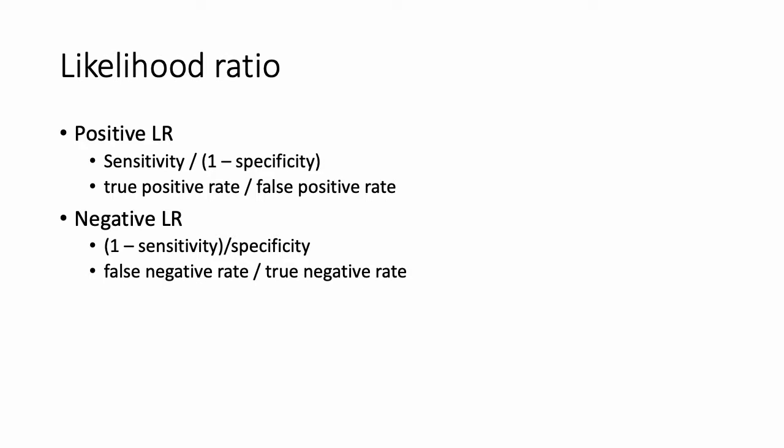A higher likelihood ratio, or a likelihood ratio greater than 1, is going to increase the likelihood of your patient having the disease that you're testing for. The negative likelihood ratio is the probability of the patient testing negative who has the disease, divided by the probability of a patient testing negative who does not have the disease — also expressed as the false negative rate over the true negative rate, or 1 minus sensitivity over the specificity.